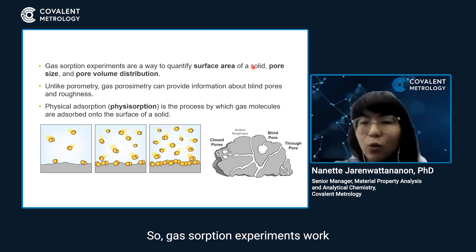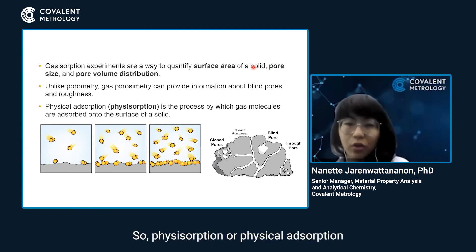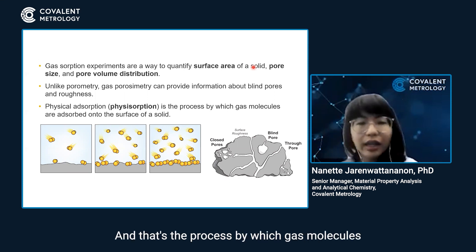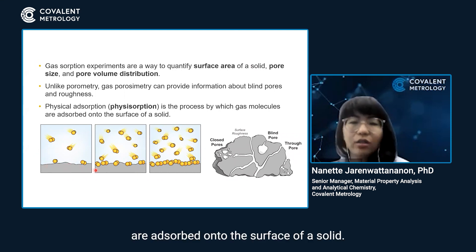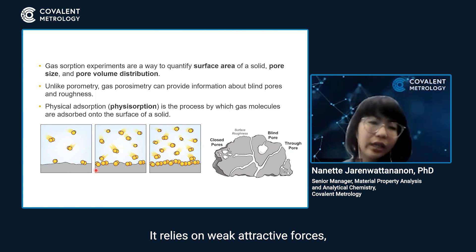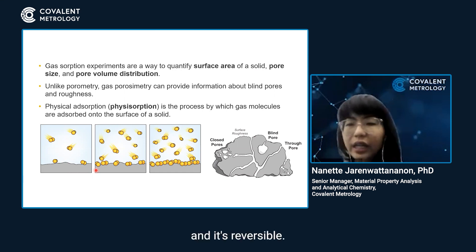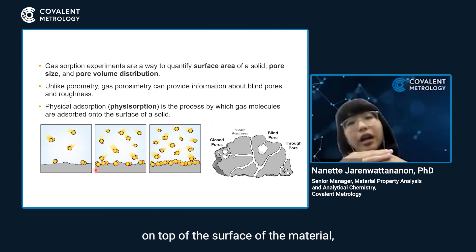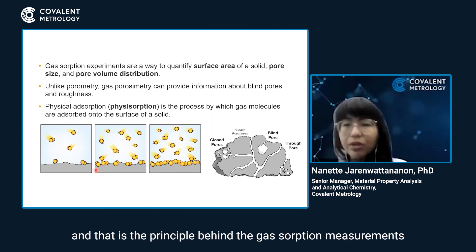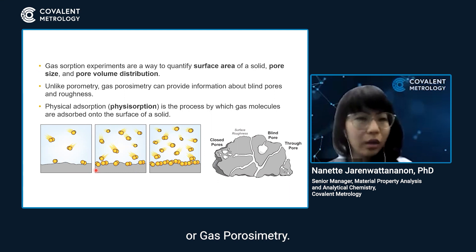Gas sorption experiments work by a process called physisorption. Physisorption, or physical adsorption, is a reversible process by which gas molecules are adsorbed onto the surface of a solid. It relies on weak attractive forces — van der Waals forces. It's a nonspecific method, and we can use it to form multiple stacking layers on top of the surface of a material. That is the principle behind gas sorption measurements, or gas porosimetry.